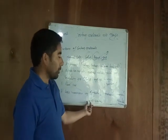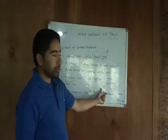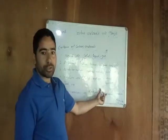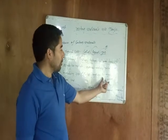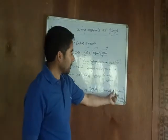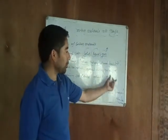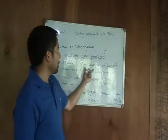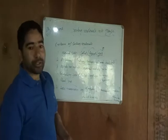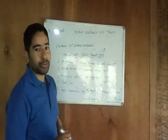One is opaque, which does not allow light. One is translucent, which allows partial light. Another one is transparent, which allows full light to pass through it. This was about sorting materials into groups. Thank you.